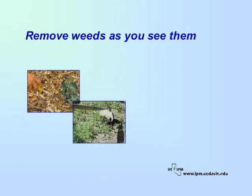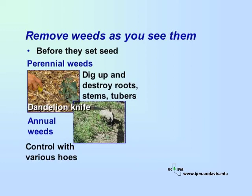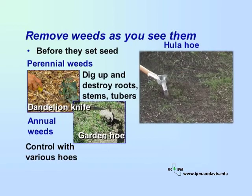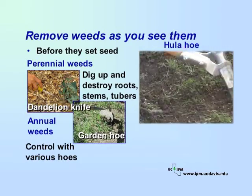You can keep your weeds down if you remove them as soon as you see them — when they are small and before they have set seed. The easiest way is to just pull them out. However, hand weeding is not practical for large areas in a school. To control perennial weeds, you must dig up and destroy all roots and underground stems and tubers. Weed knives, dandelion knives, or even screwdrivers can help dig out the weeds and their roots without much disturbance to the soil. Annual weeds can be controlled with various types of hoes. Use a garden hoe to cut weeds with a chopping motion at the soil surface or slightly below. A push-pull hoe or a hula hoe can be used for the same purpose, scraping back and forth on the surface of dry soil to cut small weeds off at their basal stem.